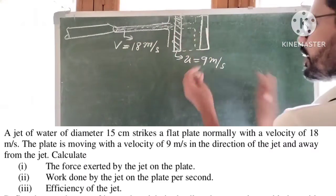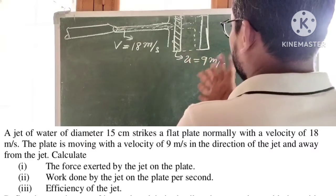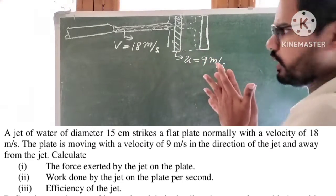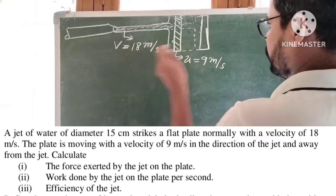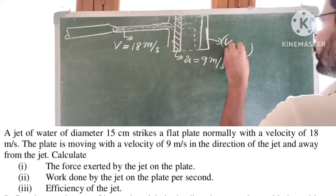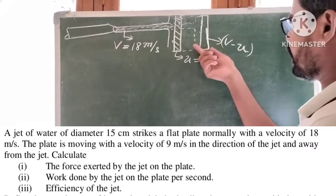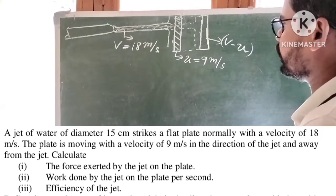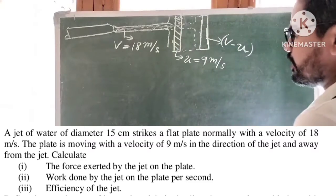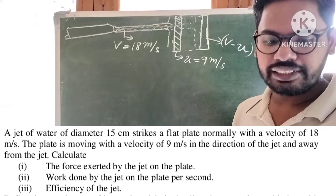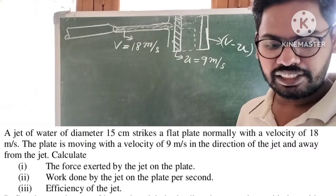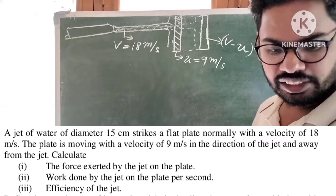So what is the relative velocity of the jet with respect to the plate? Relative velocity is equal to V minus U. The relative velocity of the jet with respect to the plate is V minus U. So in this case, we need to find the force exerted by the jet on the plate. Let us collect all the given data.